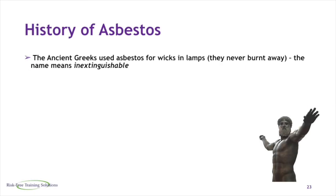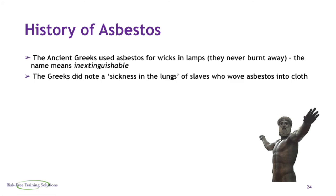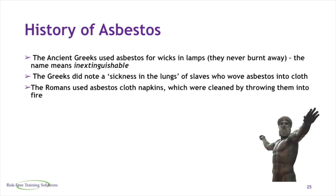The ancient Greeks used asbestos for wicks in lamps as they never burnt away. The name means inextinguishable. The Greeks did note a sickness in the lungs of slaves who wove asbestos into cloth. The Romans used asbestos cloth napkins, which were cleaned by throwing them into fire.